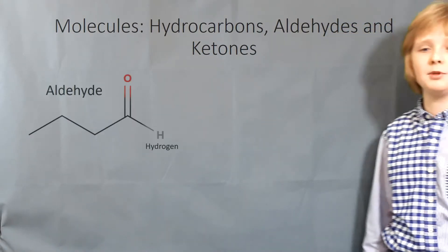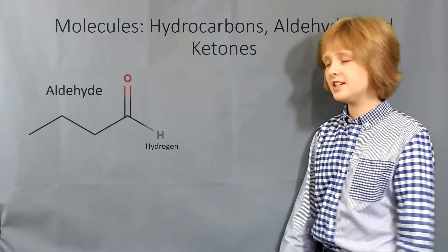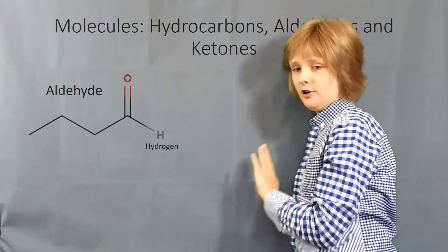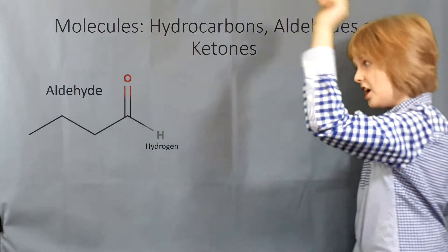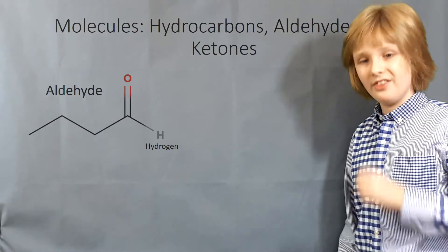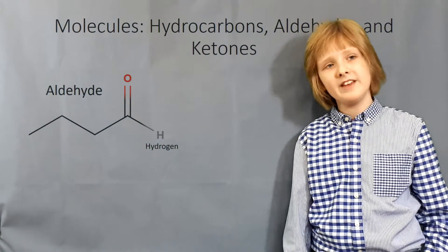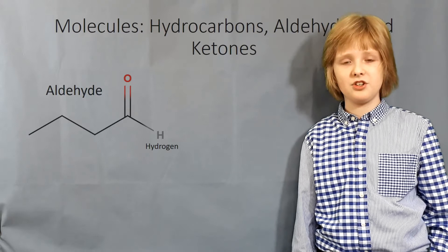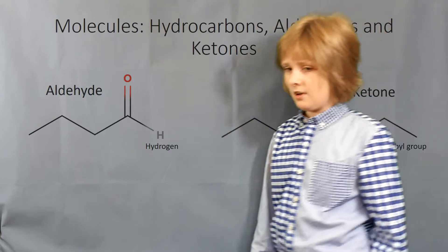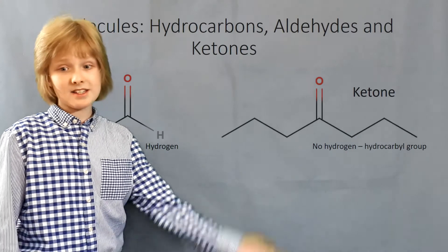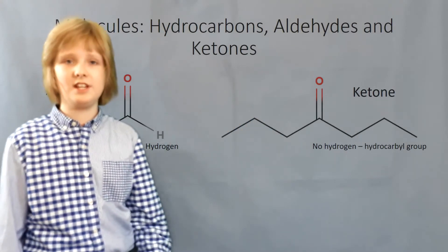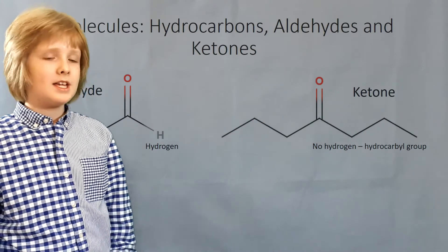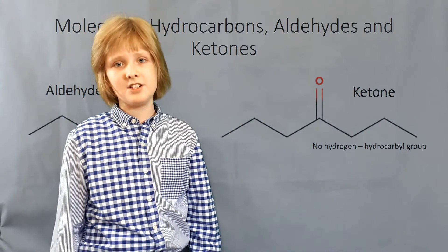This is an example of an aldehyde. You can see that we have a carbonyl group there, and a hydrocarbol group going off to one side, and a hydrogen on the other side. That's what makes it an aldehyde — it always has at least one hydrogen attached to the carbonyl. Whereas a ketone hasn't got hydrogen on the other side of the carbonyl; it has just another hydrocarbol group. That's why it's a ketone.